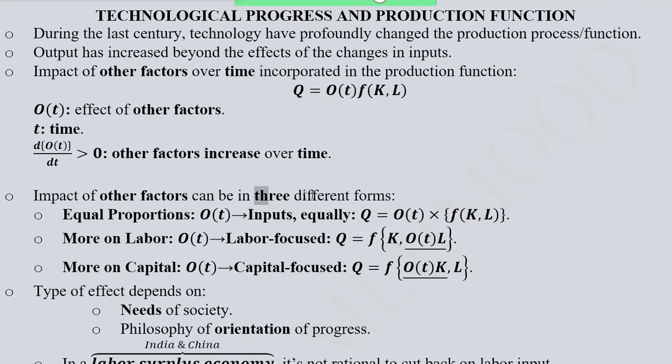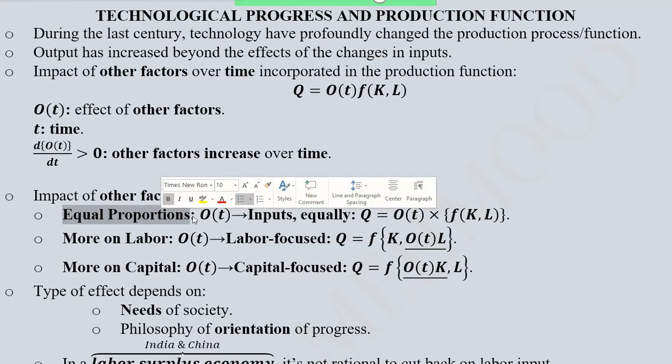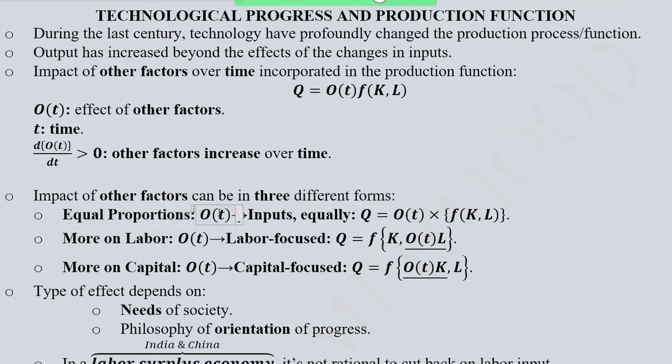There are basically three ways in which it can be incorporated in the production function. The first way is when it is equally incorporated—that is, this O(t) affects the inputs equally, both capital and labour.